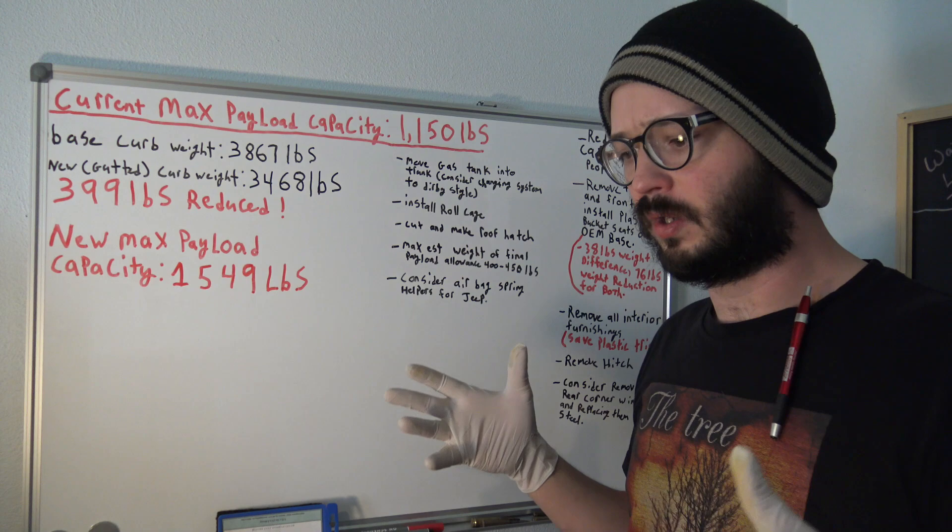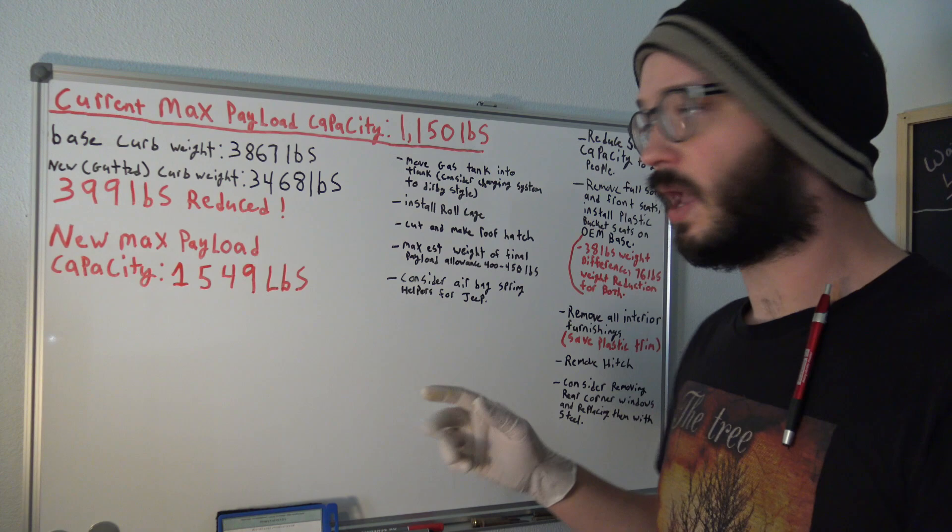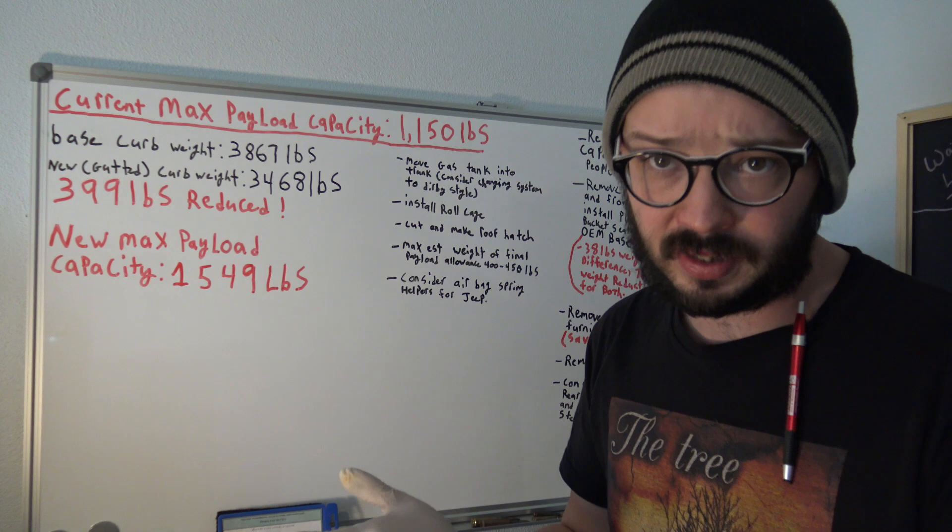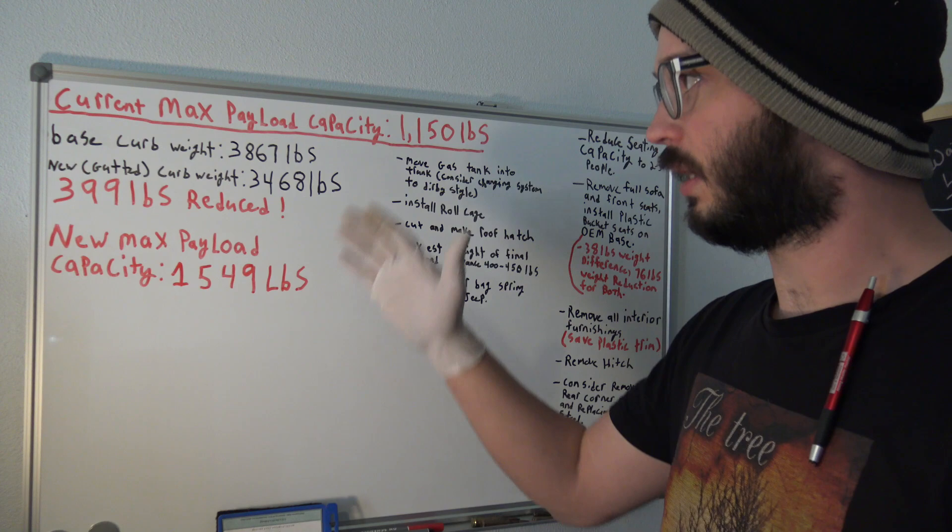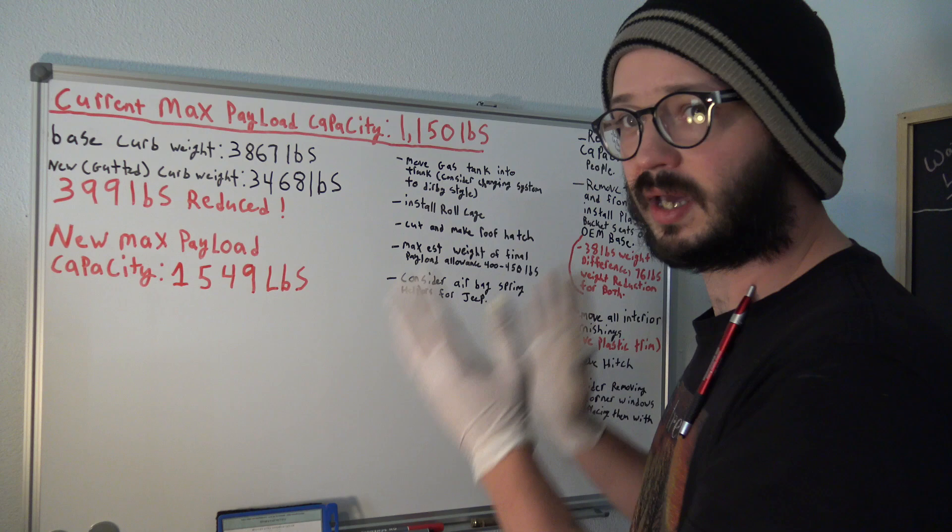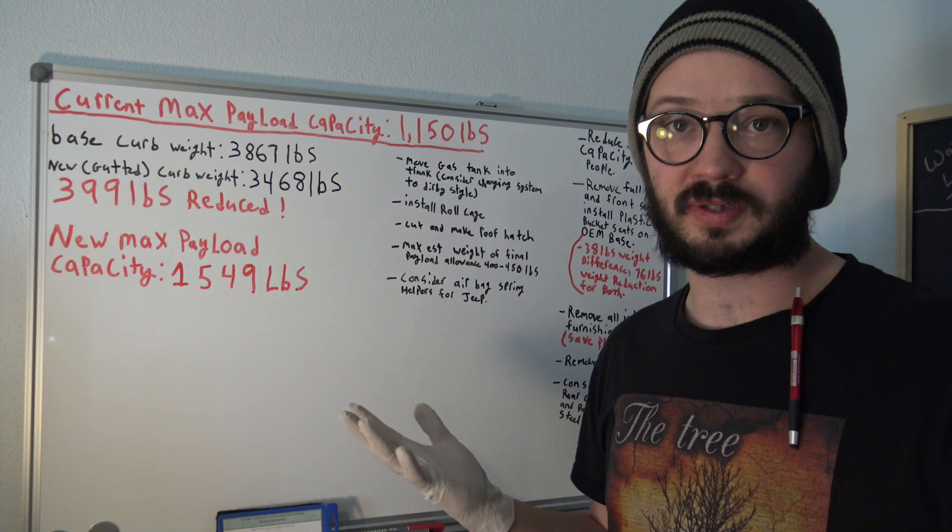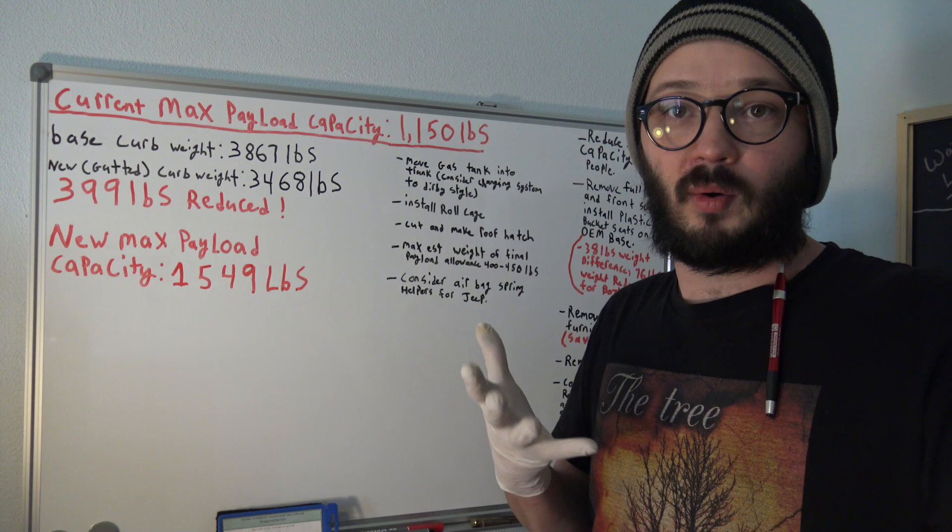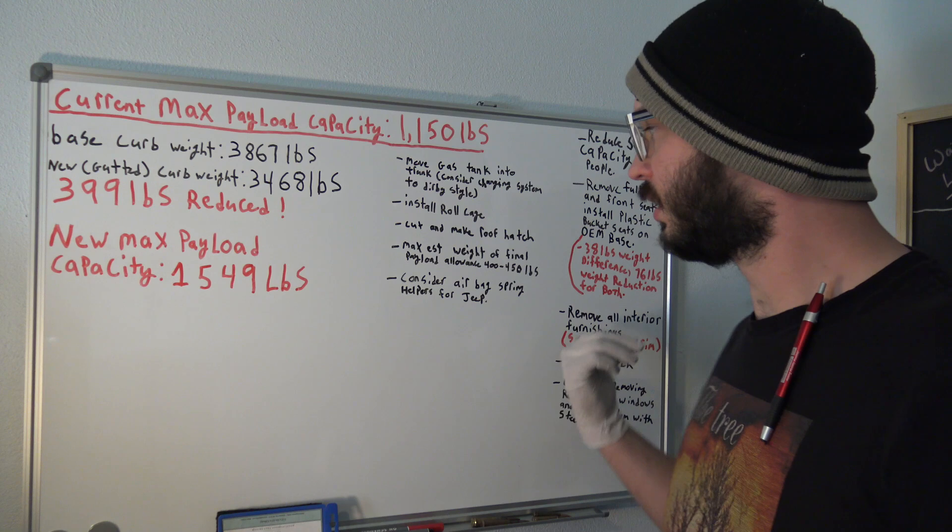So essentially, remove everything from the hitch, the seats, and use plastic where we can, lightweight seats, to keep a much lower weight cost. Because right now, that's the biggest issue, is keeping this as light as possible so we don't run over essentially what our max weight can be. So first we'll start with how I ended up gutting this vehicle and some of the issues I ran into, and we'll talk more about some of these other things in a minute.